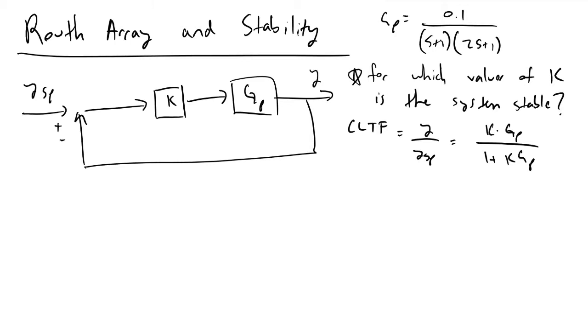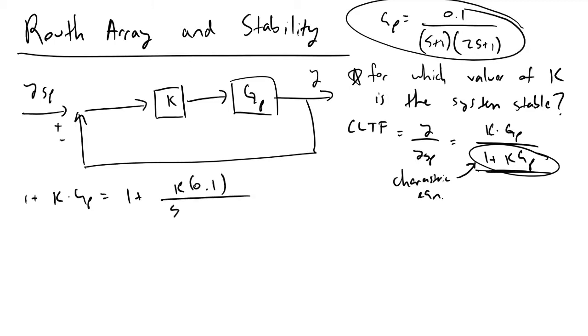What we're interested in here is the denominator of our closed-loop transfer function, which is also called our characteristic equation, because the characteristic equation is where we're going to be determining the poles of our closed-loop transfer function. If we now look more closely at our characteristic equation, 1 plus K times GP, this is equivalent to 1 plus K times 0.1 divided by (S plus 1) times (2S plus 1).